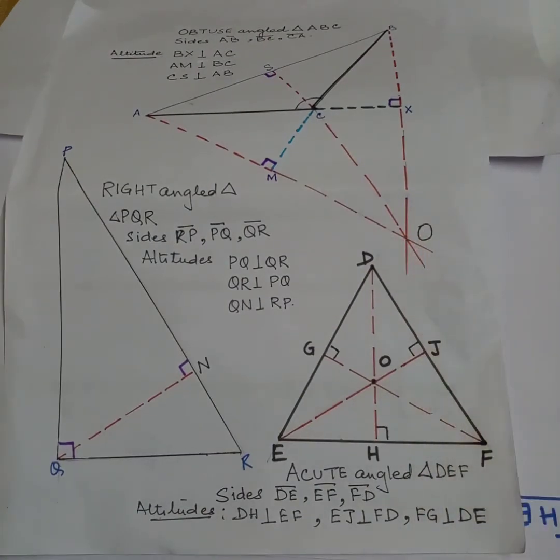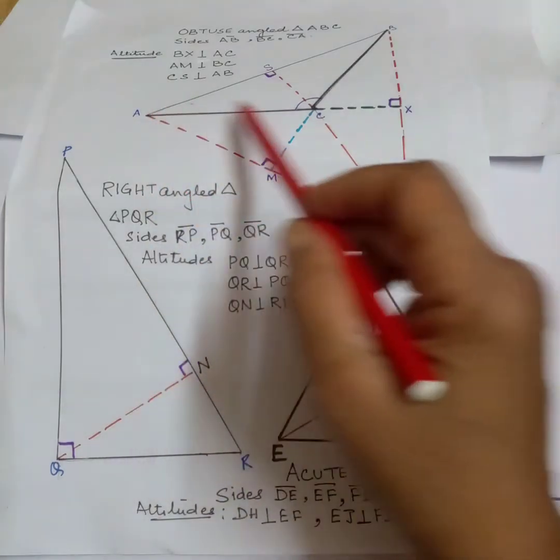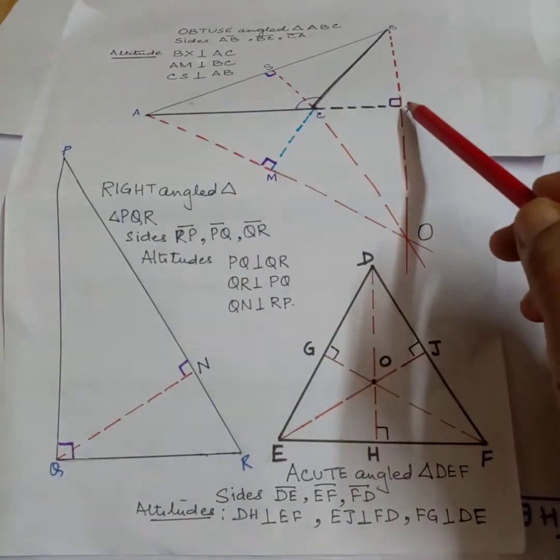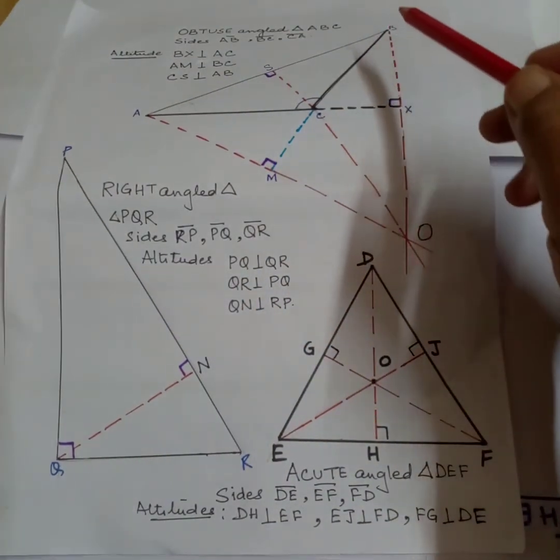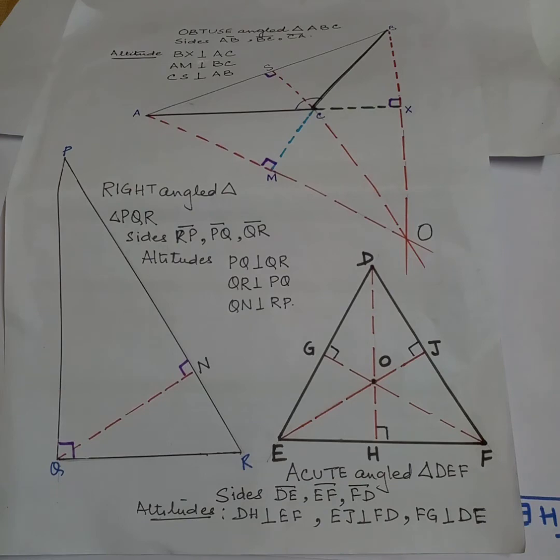In obtuse angle triangles, altitude will lie outside the triangle. This triangle is formed and by extending this line the altitude is formed here. And in an equilateral triangle all the altitudes are medians and vice versa. Altitude is the shortest distance from the vertex to its opposite side.